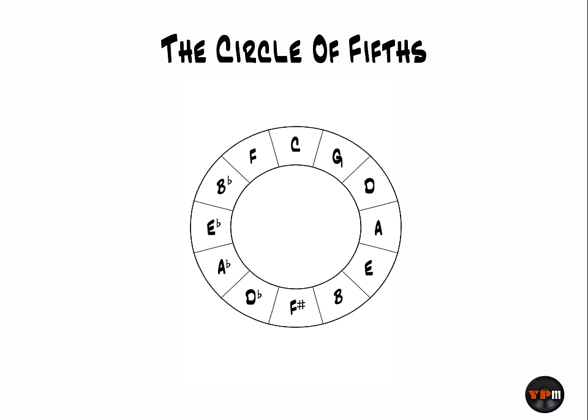The concepts of dominant and subdominant — the V and IV chords — tie neatly to the circle of fifths. In this circle, C is the tonic, the dominant G is to the right, and the subdominant F is to the left. The circle builds on fifths going clockwise — the major-sounding side of the circle, according to Collier — and it builds on fourths going counterclockwise, the minor-sounding side. Again, this isn't a scientific concept; it's just one of the many ways Jacob Collier hears music.